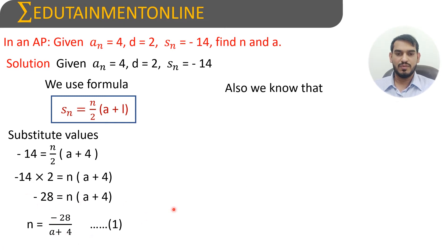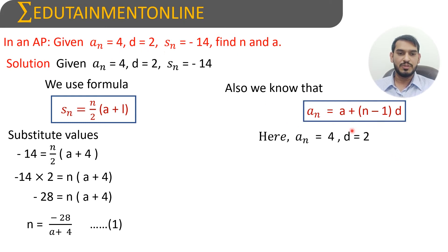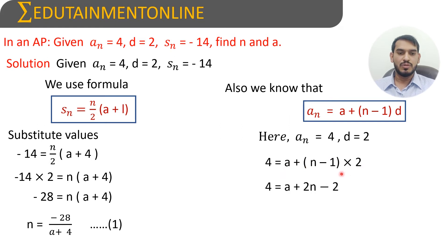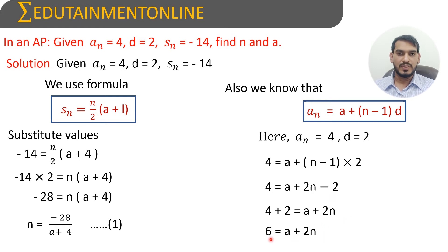Now we substitute in the formula of aₙ equals a plus n minus 1 into d. We have aₙ equals 4 and d equals 2. Substituting: 4 equals a plus n minus 1 into 2, so 4 equals a plus 2n minus 2. Therefore, 4 plus 2 gives us 6 equals a plus 2n.